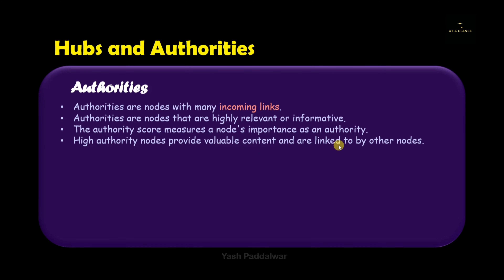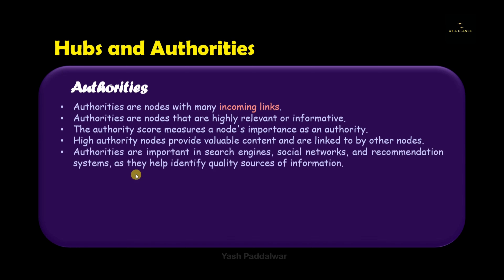To decide whether a particular node is the best authority node, it is based on the authority score. The authority score is a measure of a node's importance as an authority. If a particular authority node has the highest authority score, it is considered to be a valuable content on the web. The concept of authorities is very important in search engines, social networks, and recommendation systems, as they help identify quality sources of information.